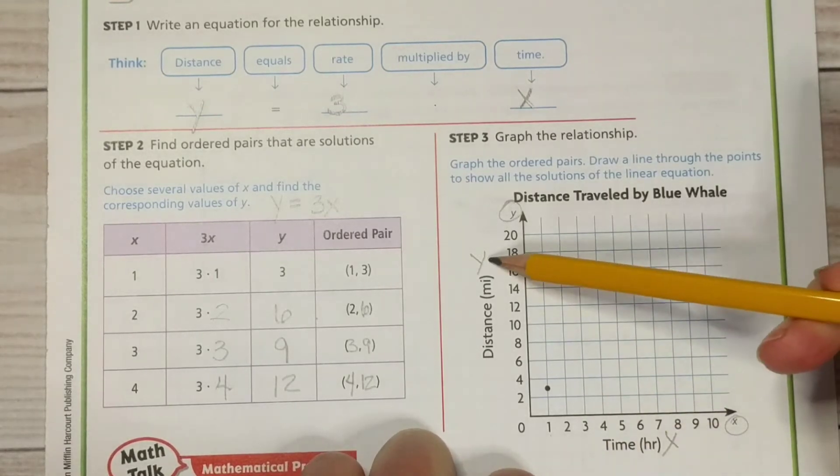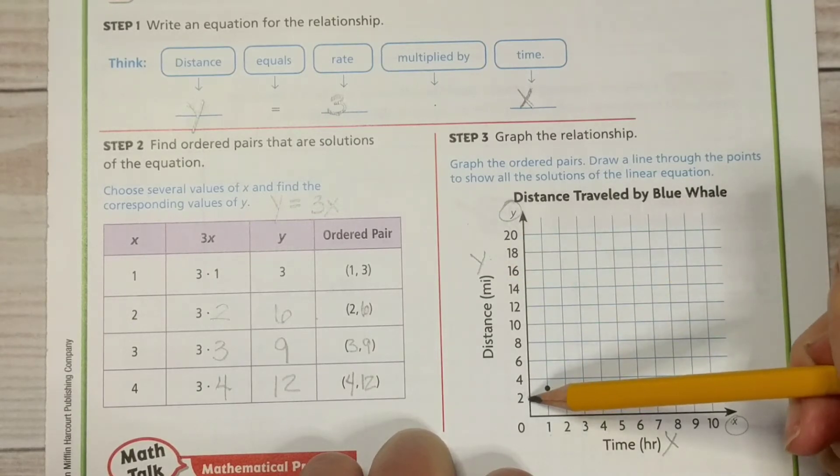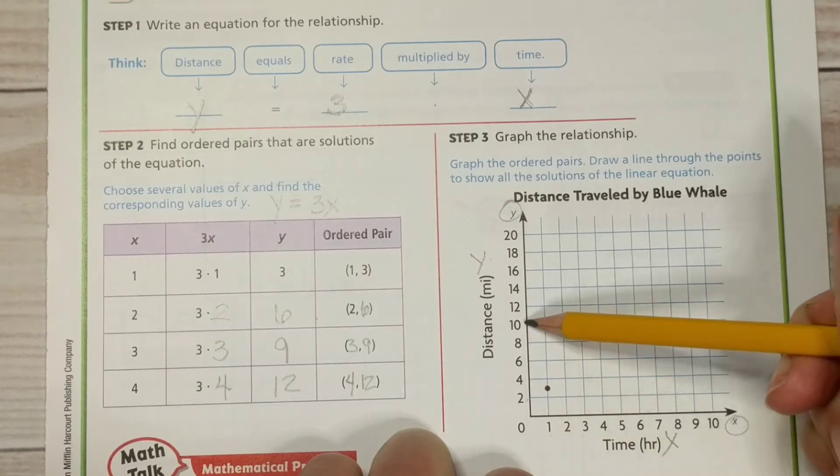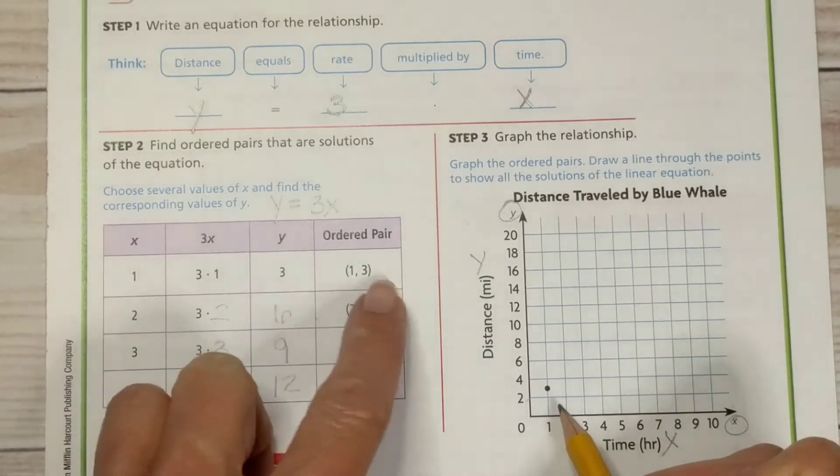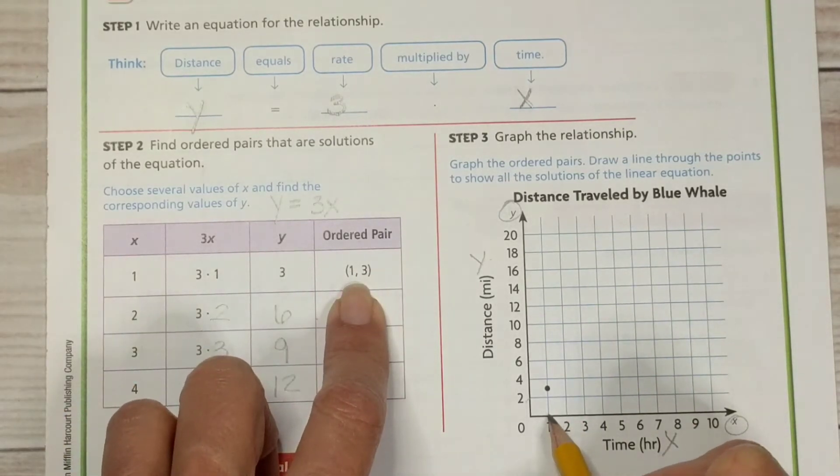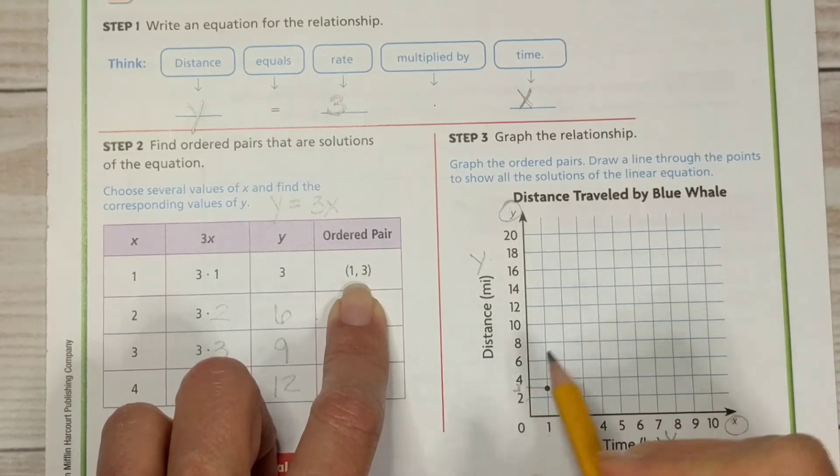Over here for our distance, they went ahead and did intervals of 2. So their count bys are 2. 2, 4, 6, 8, 10.